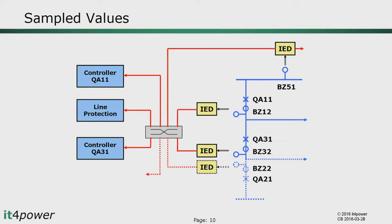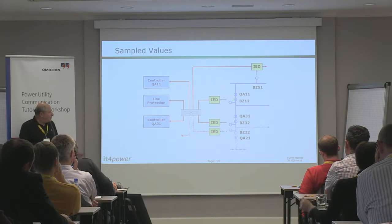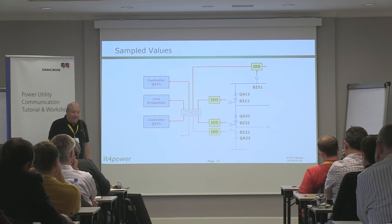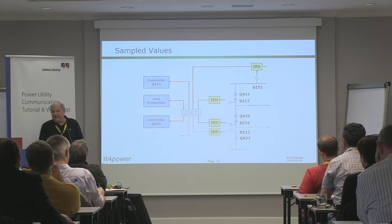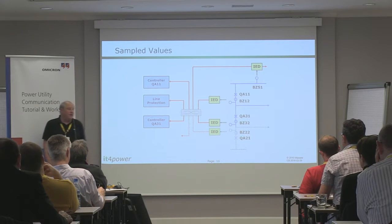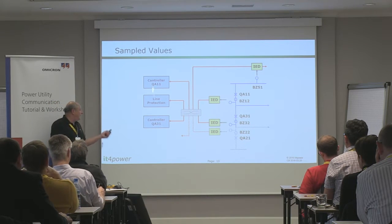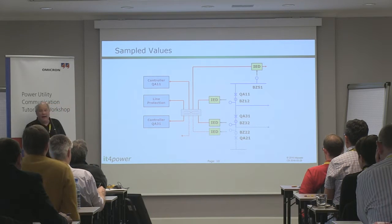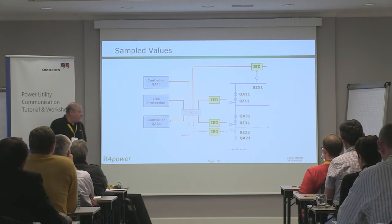Sampled values are used instead of performing analog-to-digital conversion inside the protection device. The conversion now happens down in the process where the current and voltage transformers are located, typically in what we call a merging unit. The analog signal is converted to a digital signal and a stream of samples is communicated over the network. Whoever needs that information can subscribe to it, receive it, and build their algorithms on the basis of those sampled value messages.